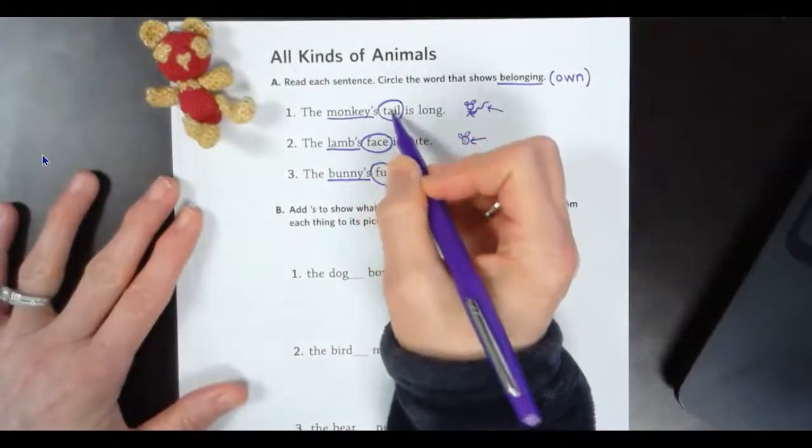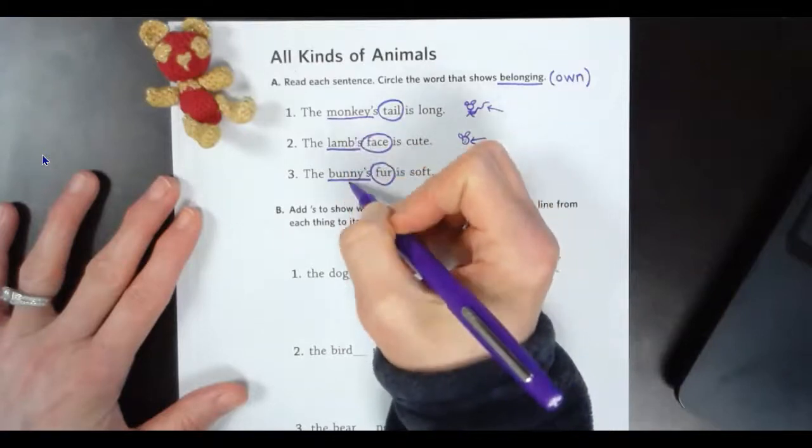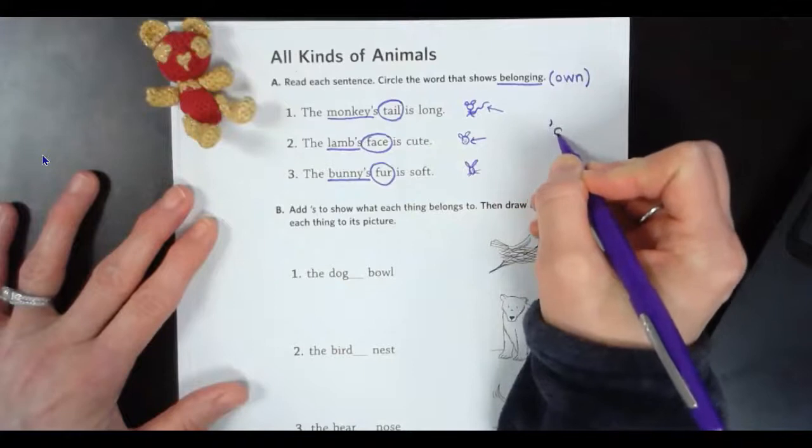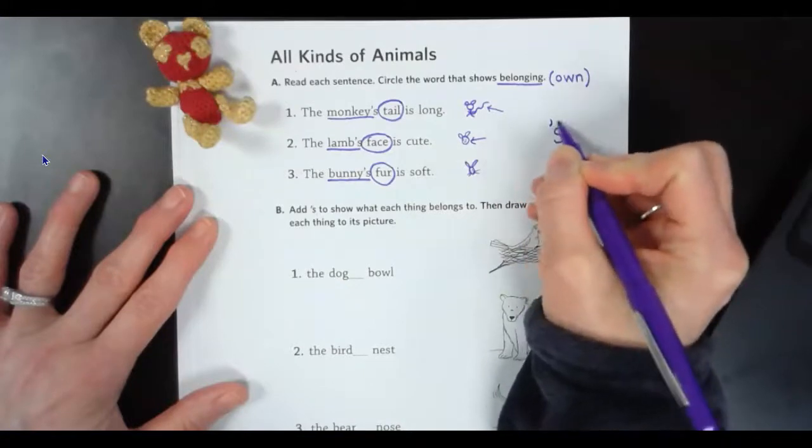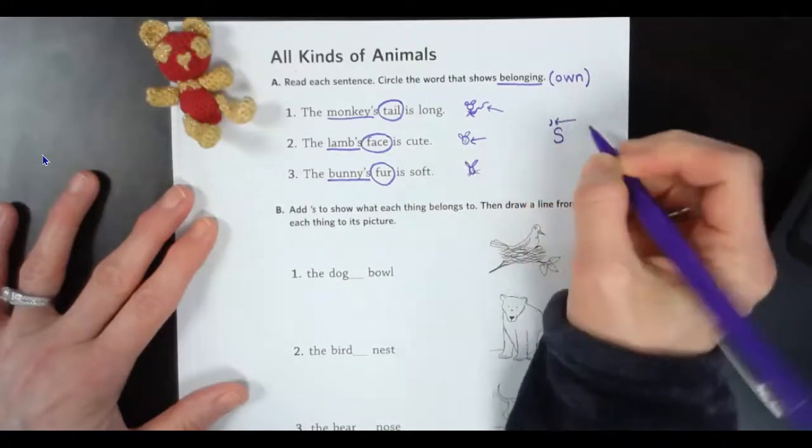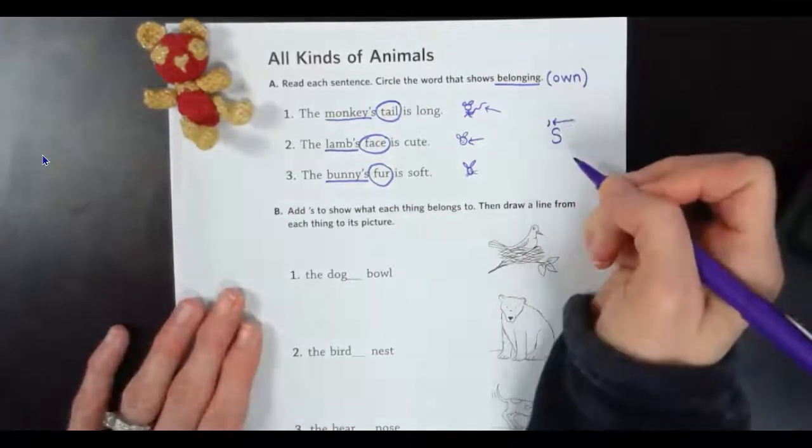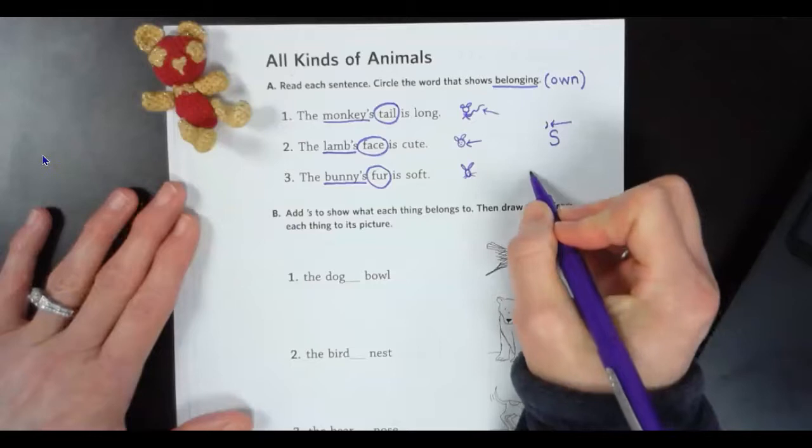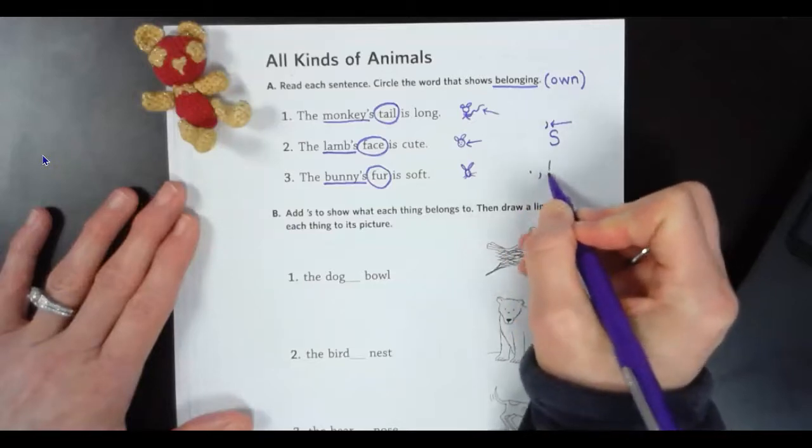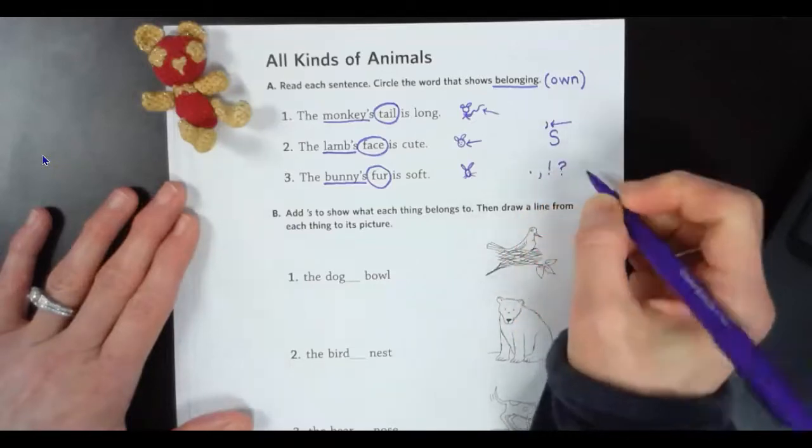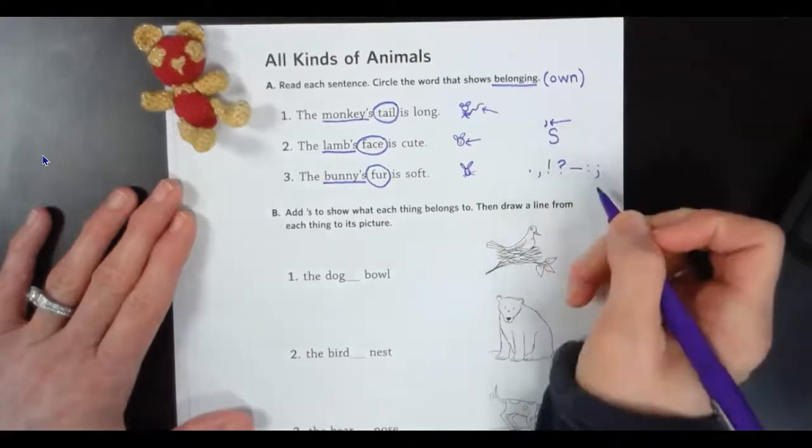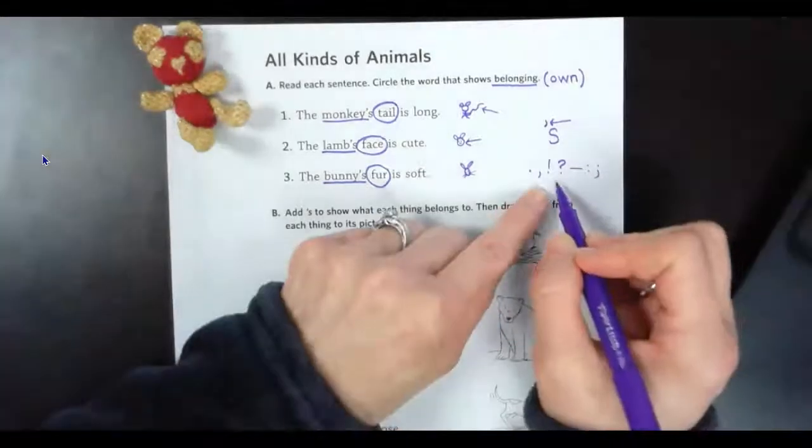And to show that these things belong to these animals, we use an apostrophe S. This little thing right here is called an apostrophe. It's an important piece of punctuation. Punctuation is things like periods, commas, exclamation points, question marks, dashes, colons, semicolons. Oh, I could go on and on.